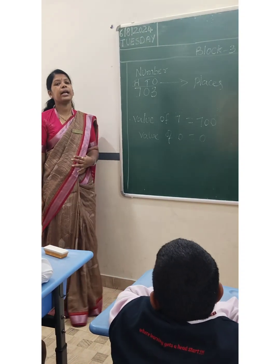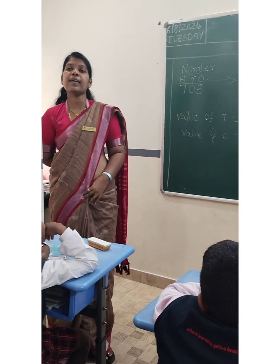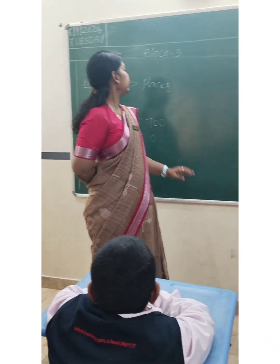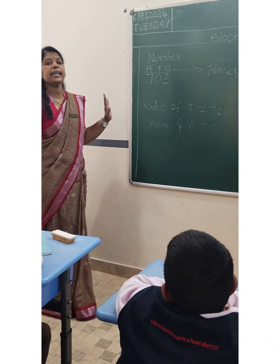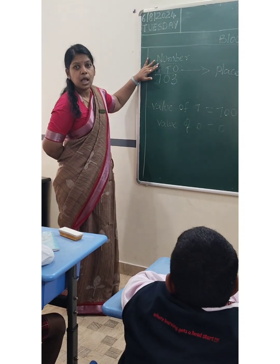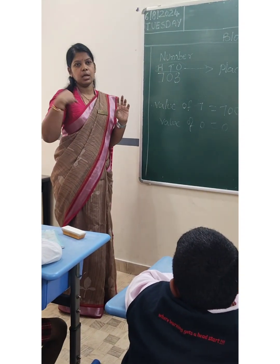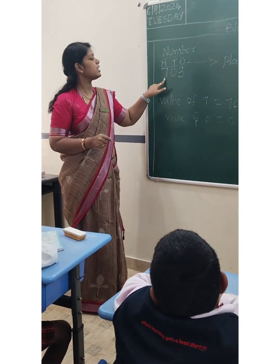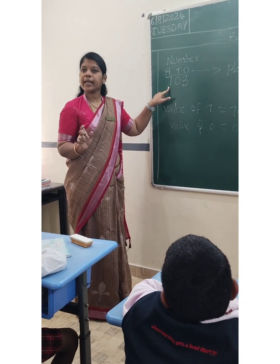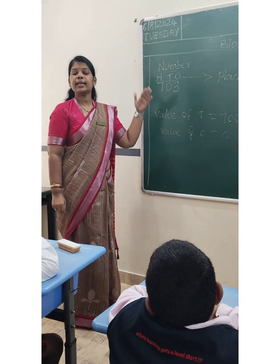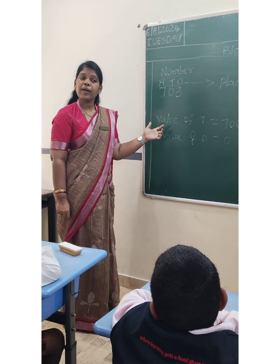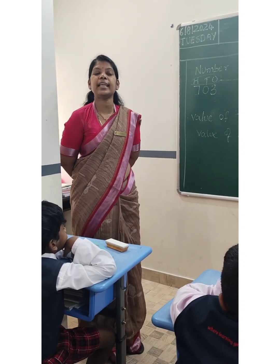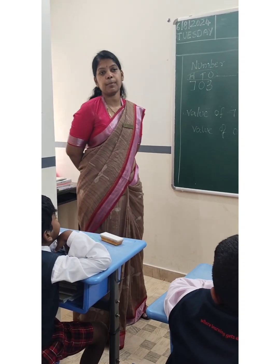Now coming to face value. What is the face value? Face value is nothing but the number itself. It is not related with the places or with the value. Face value of 3 is 3. Face value of 0 is 0. Face value of 7 is 7. It is not related with the places, neither with the values. Face value is nothing but the number itself — like a mirror image.